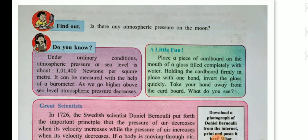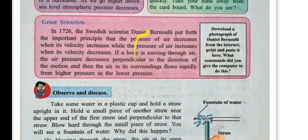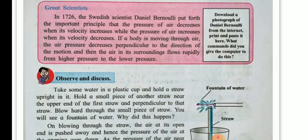Now let us see great scientists. In 1726, the Swedish scientist Daniel Bernoulli put forth the important principle that pressure of air decreases when its velocity increases, while the pressure of air increases when its velocity decreases. If a body is moving through air, the air pressure decreases perpendicular to the direction of the motion and then the air in its surrounding flows rapidly from a higher pressure to a lower pressure.